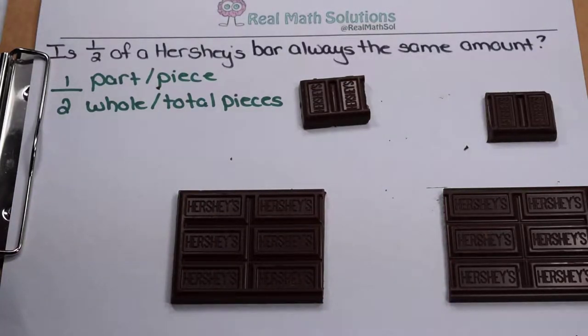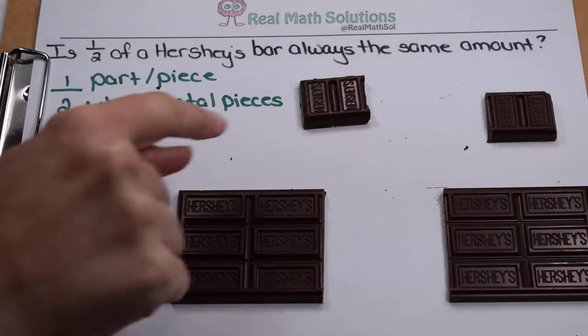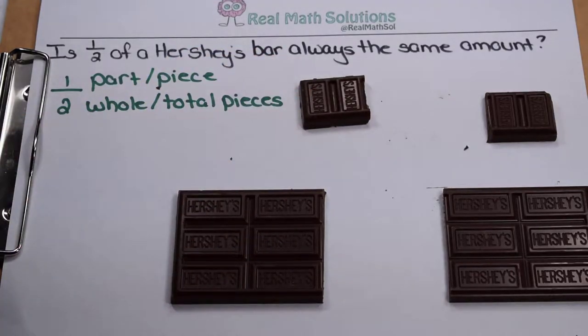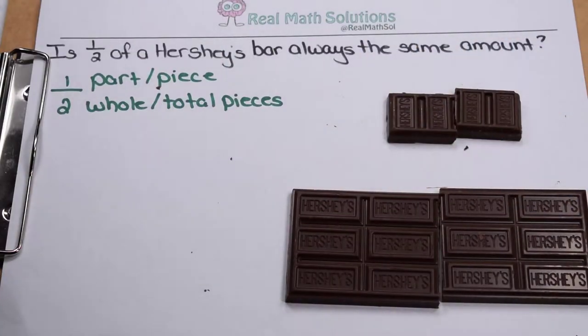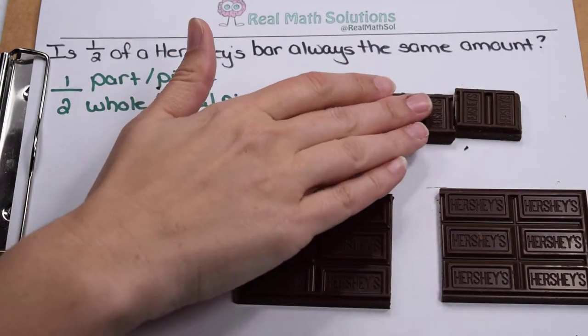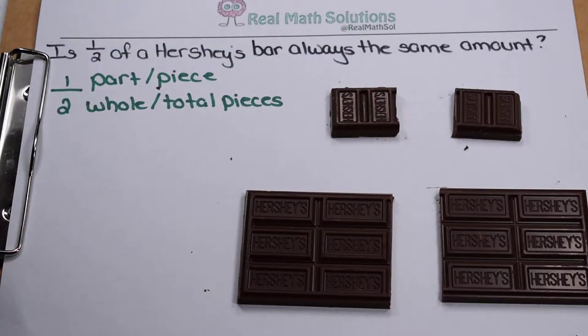So one half isn't always going to be the same amount. Now, how much you get in that one half depends on how big your whole is. The bigger your candy bar starts out, the larger your one piece out of the two total is going to become. So think about that when you start divvying up who gets half of what.